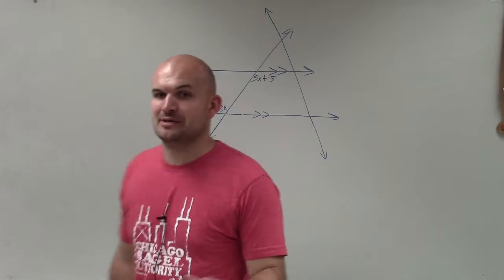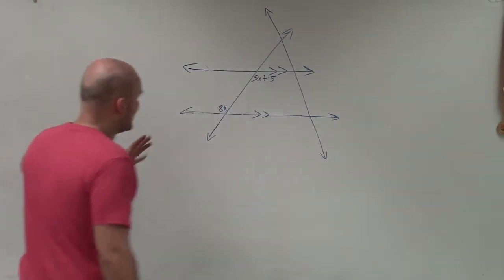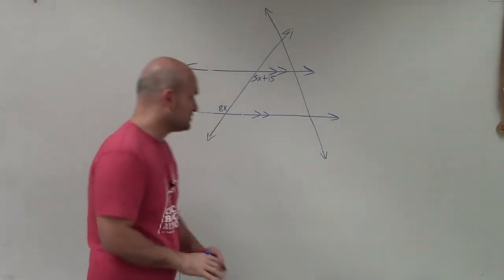Now, when we're talking about angle relationships, we only need one transversal. So what I need to do is get rid of the extra information that is just going to confuse me for this problem. I only need one transversal.